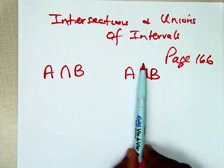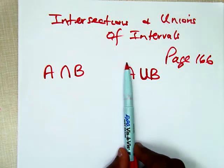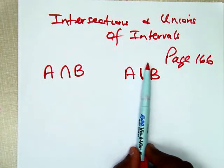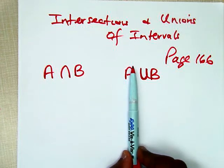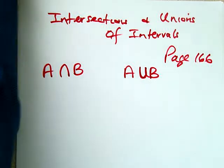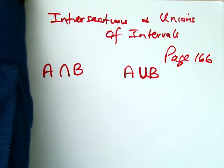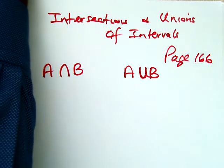This symbol means union. A union B means list all the items that are in A and also all the items that are in B.